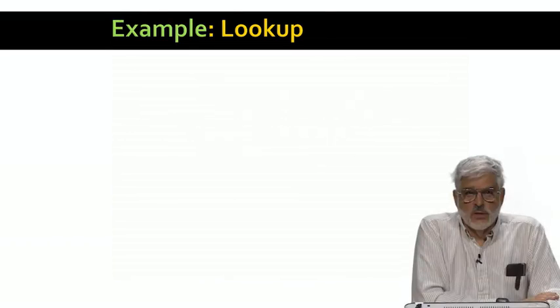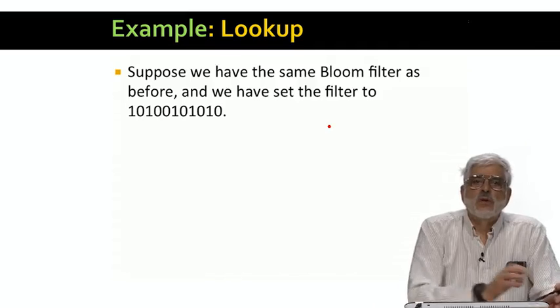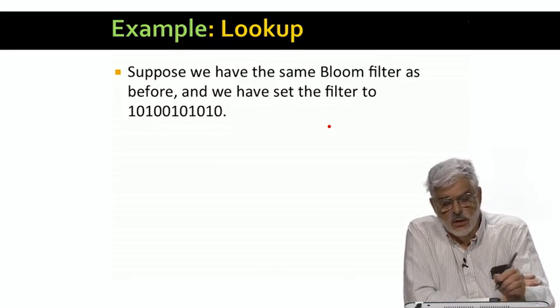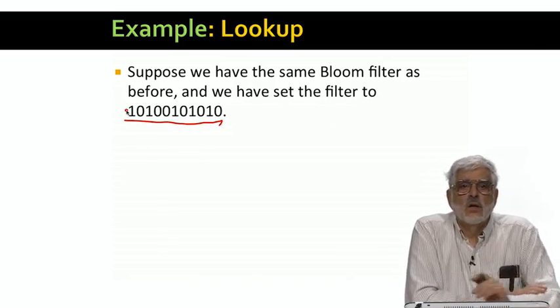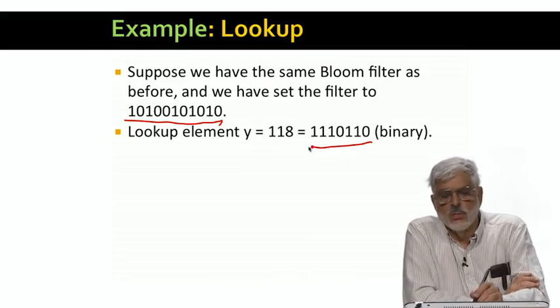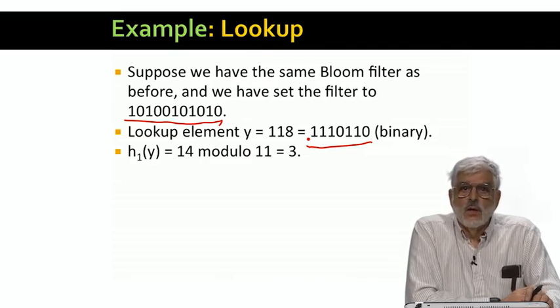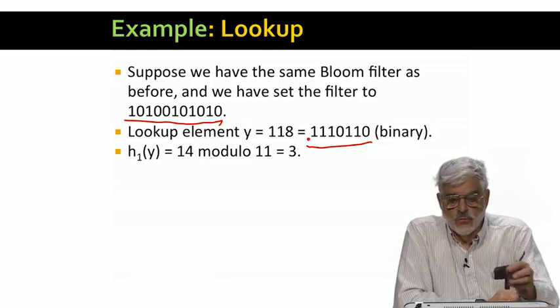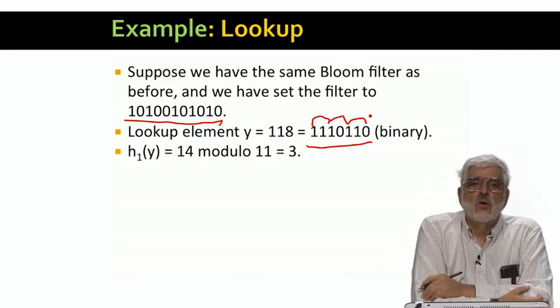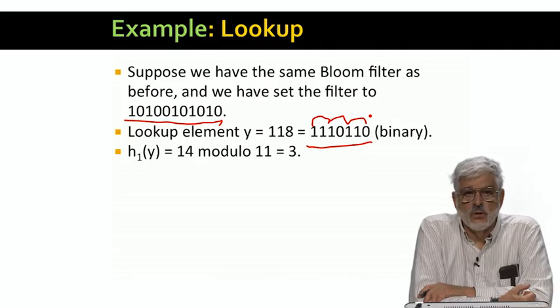Let's take up an example of how we test membership in a set. We'll start where we left the previous example. We had inserted three elements, 25, 159, and 585, into the set, which left the bloom filter looking like this. Suppose we now want to lookup 118, which is this in binary. The odd positions form 1, 1, 1, 0, which is 14 in decimal. Thus, h1 of 118 is 14 modulo 11, or 3.